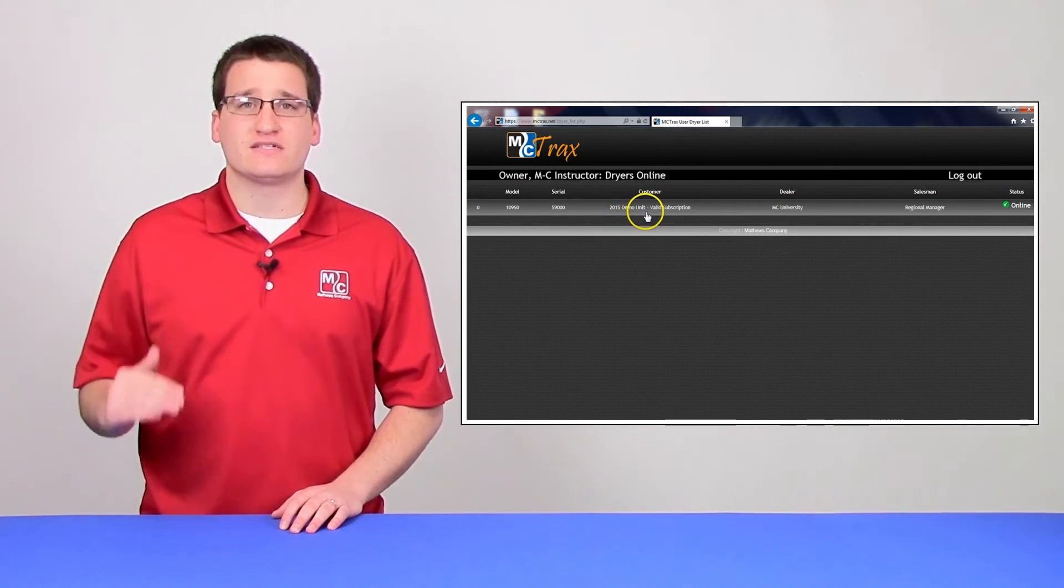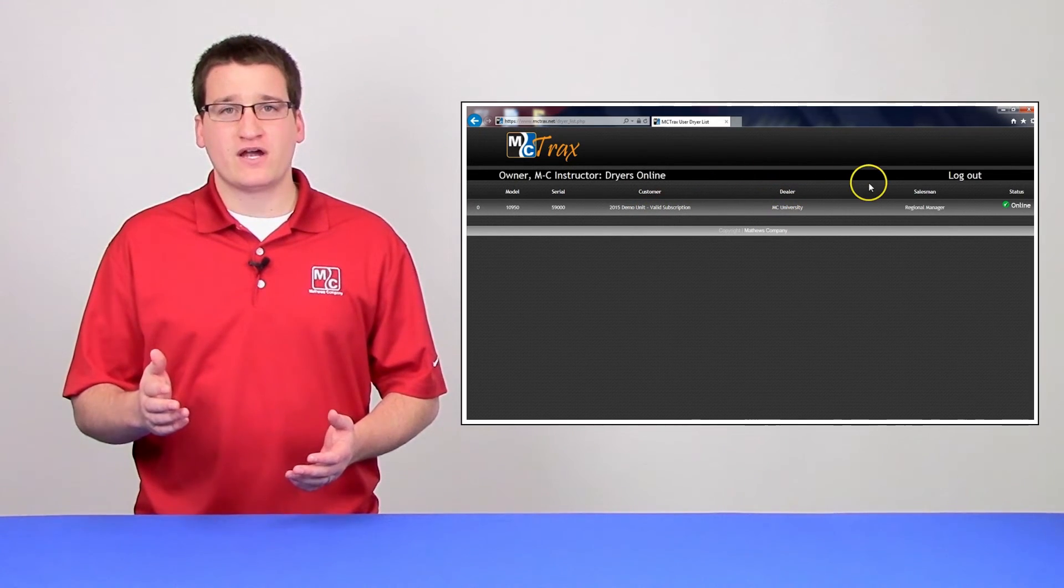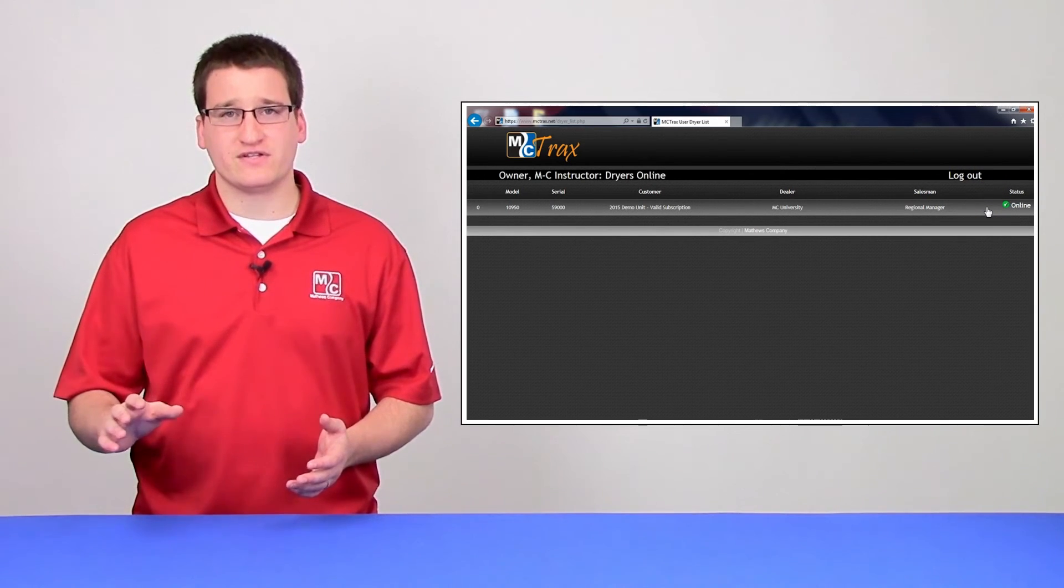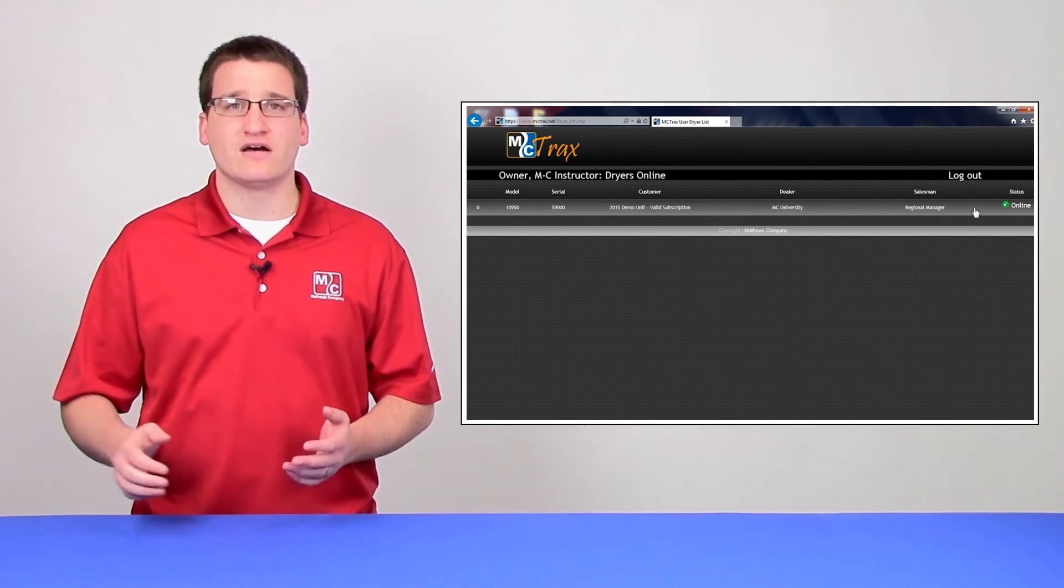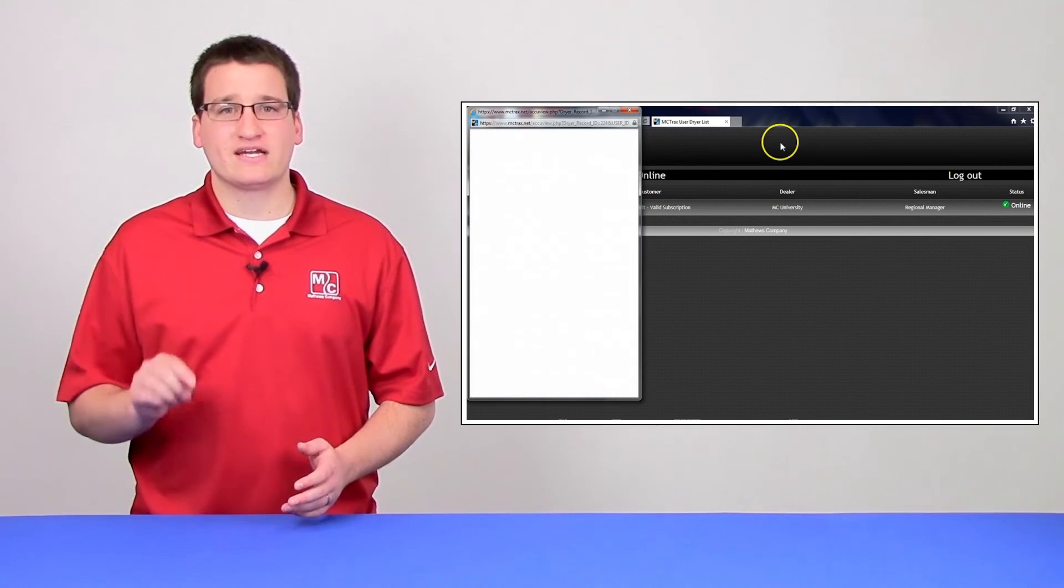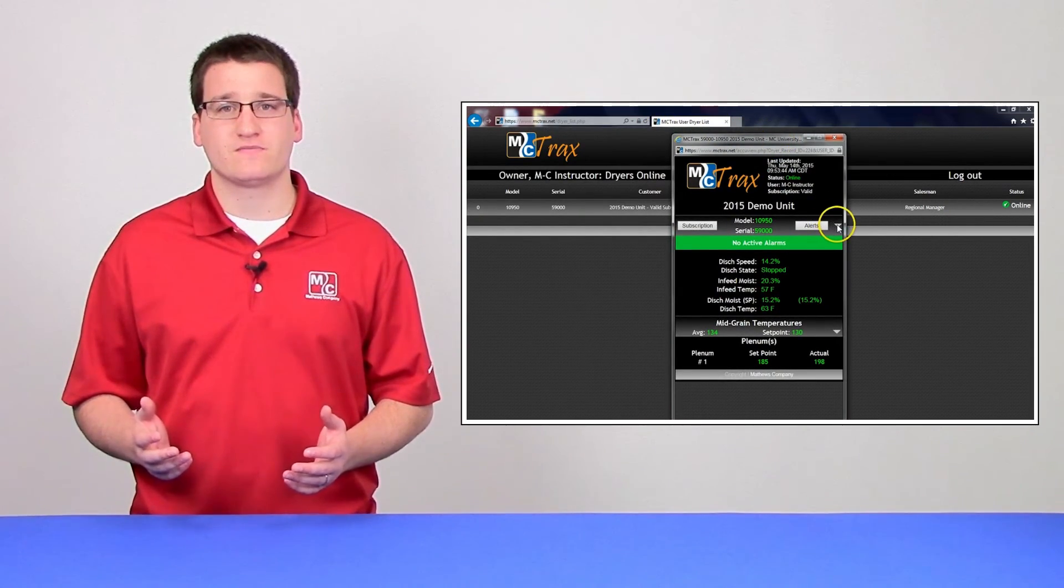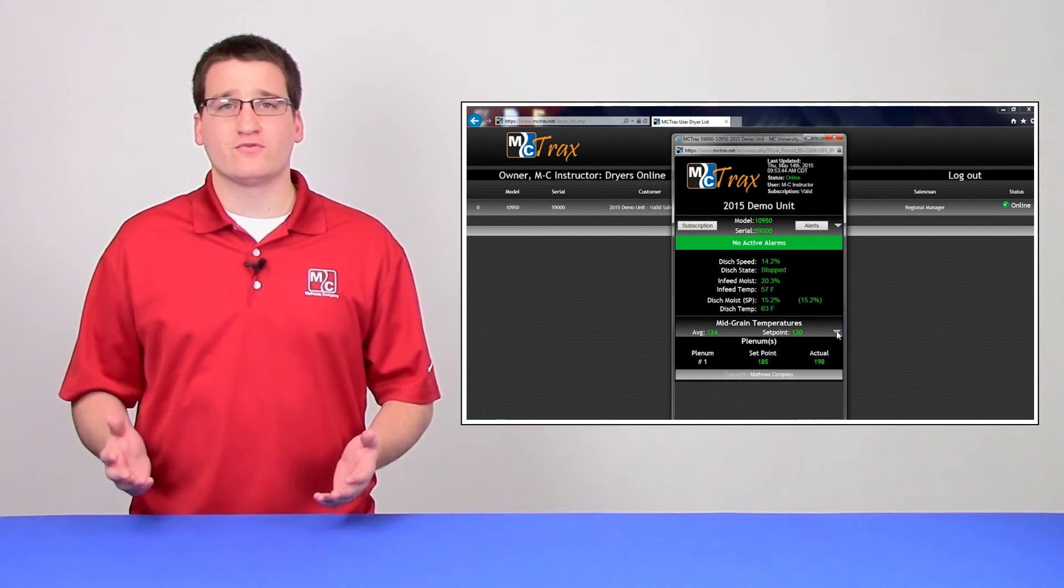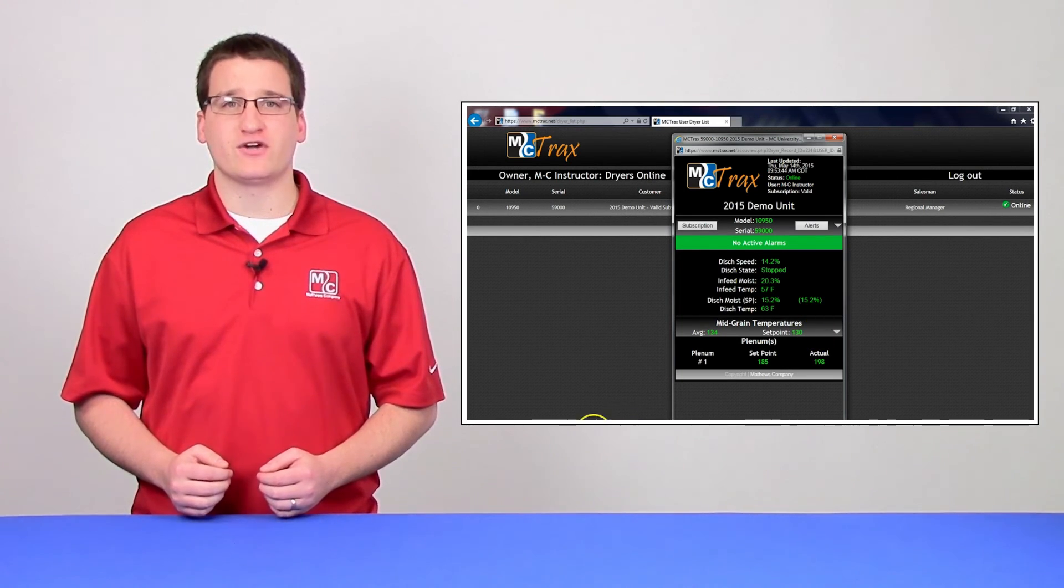Now you'll have a list of all the dryers that you own. Look for the dryer that we're setting up right now, and make sure that your information and your dealer's information is correct. Also check that it says online under the status column. If all of this checks out, go ahead and click on that dryer. This will pull up the main MC Tracks screen. From here, you can see active alarms, set points, and current running data. If you've made it this far, you've successfully installed MC Tracks.